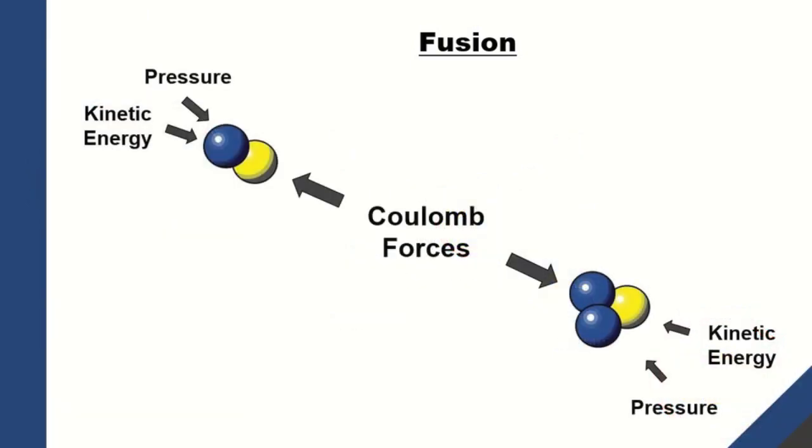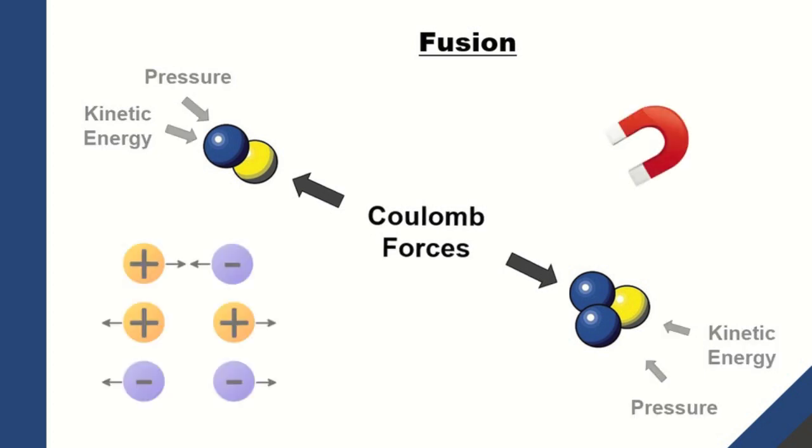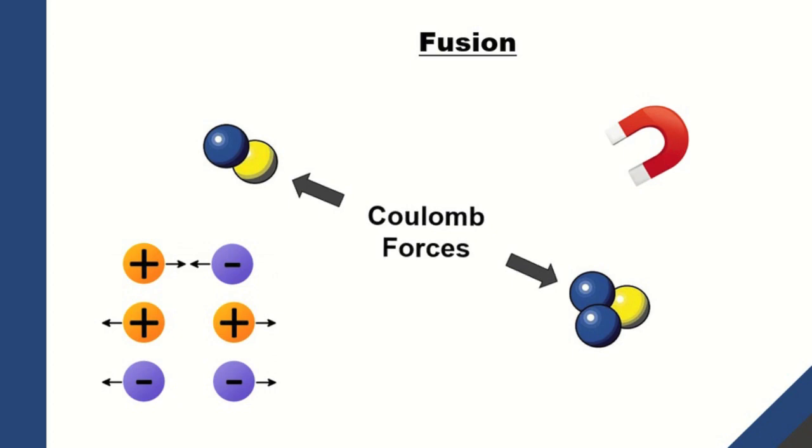For nuclear fusion to occur, the particles need to be in the superheated state of matter called plasma and at a very high pressure. This is so that the deuterium and tritium atoms can overcome the Coulomb force that pushes them apart. The Coulomb forces are the traditional electrostatic forces that we are all familiar with.